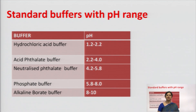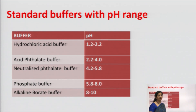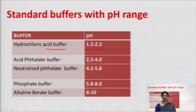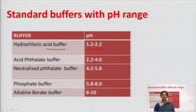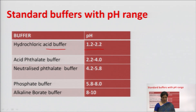Other components include potassium dihydrogen phosphate, boric acid, and potassium chloride. These salts and combinations in the desired molar range help prepare standard buffer solutions. For details, refer to the formula given in the IP appendix. The standard buffers with pH ranges used are: hydrochloric acid buffer (pH 1.2–2.2), acid phthalate buffer (pH 2.2–4), neutralized phthalate buffer (pH 4.2–5.8), phosphate buffers (pH 5.8–8.0), and alkaline borate buffers (pH 8–10).